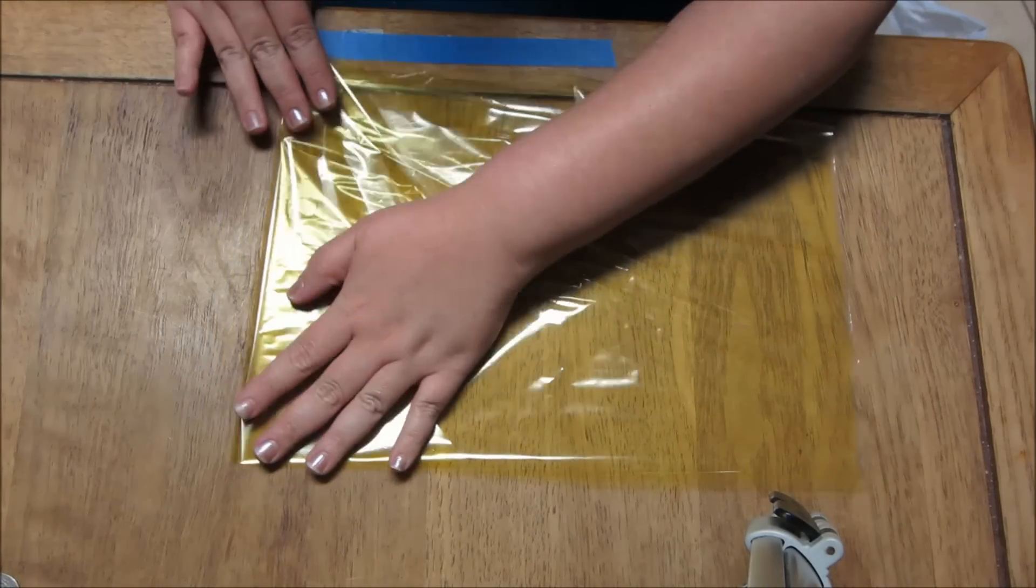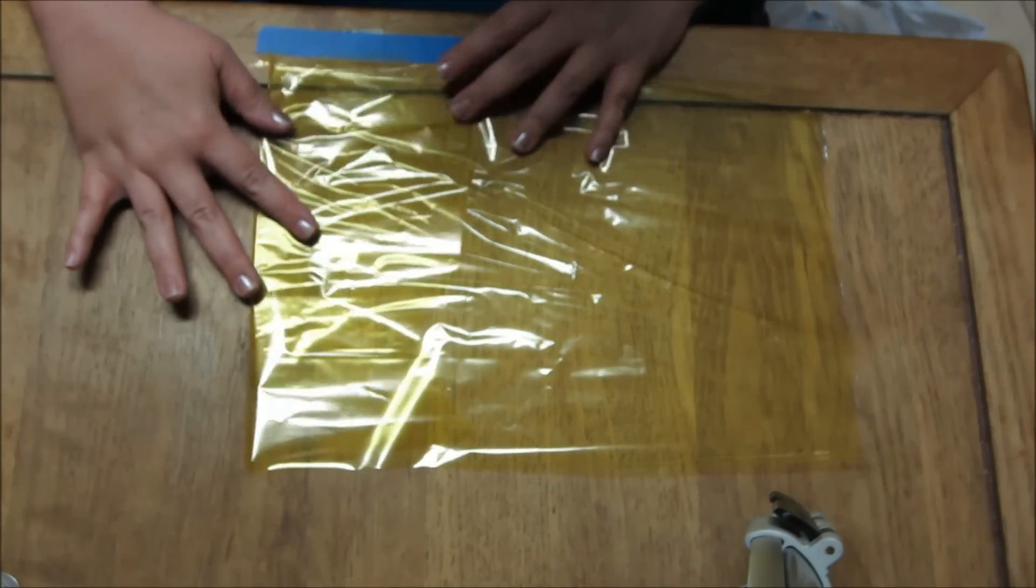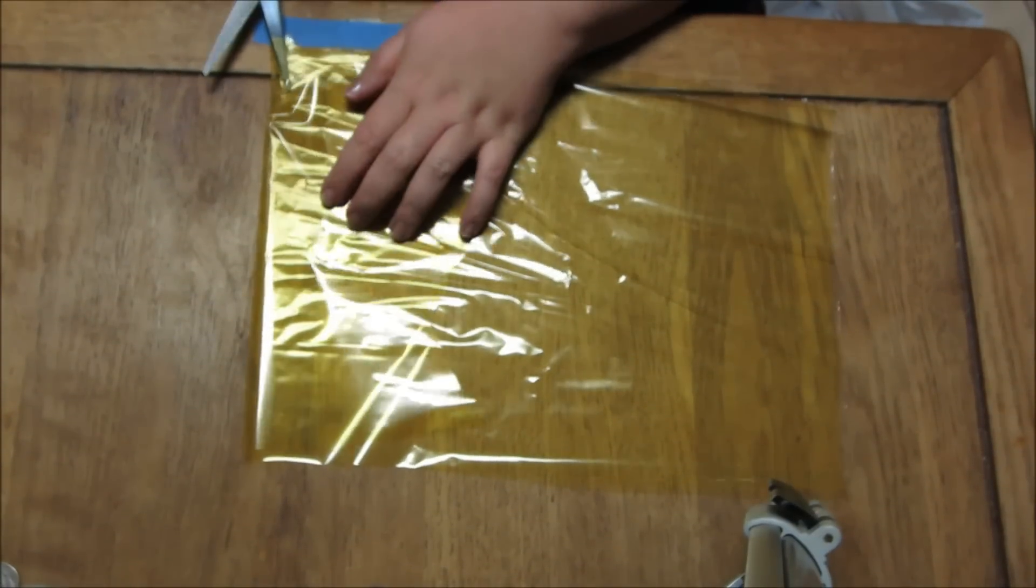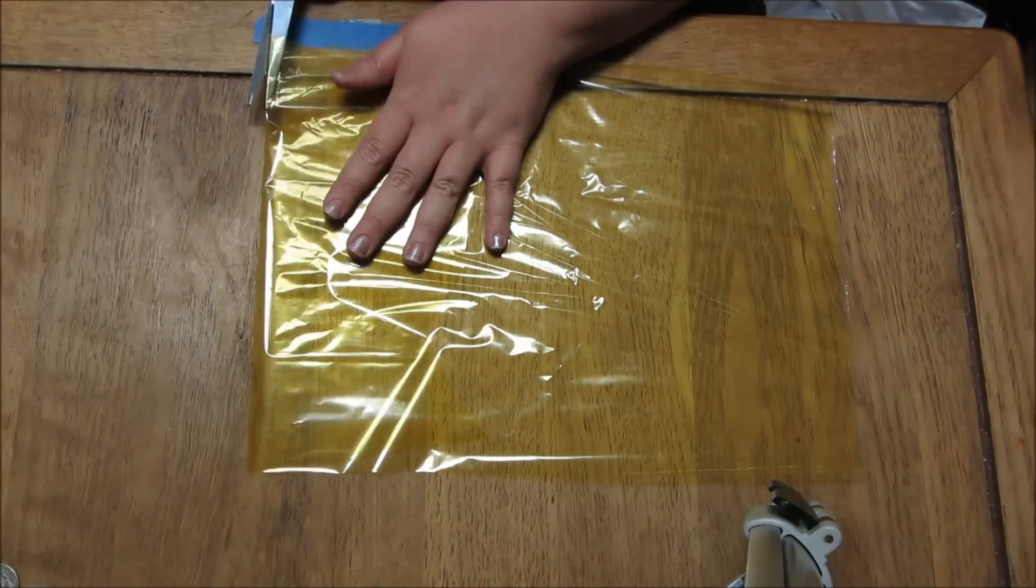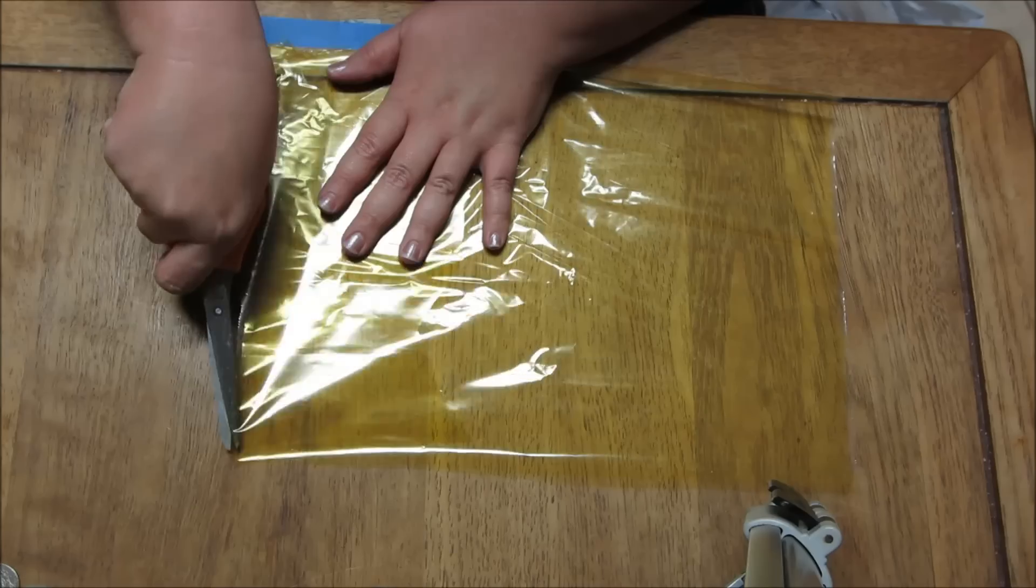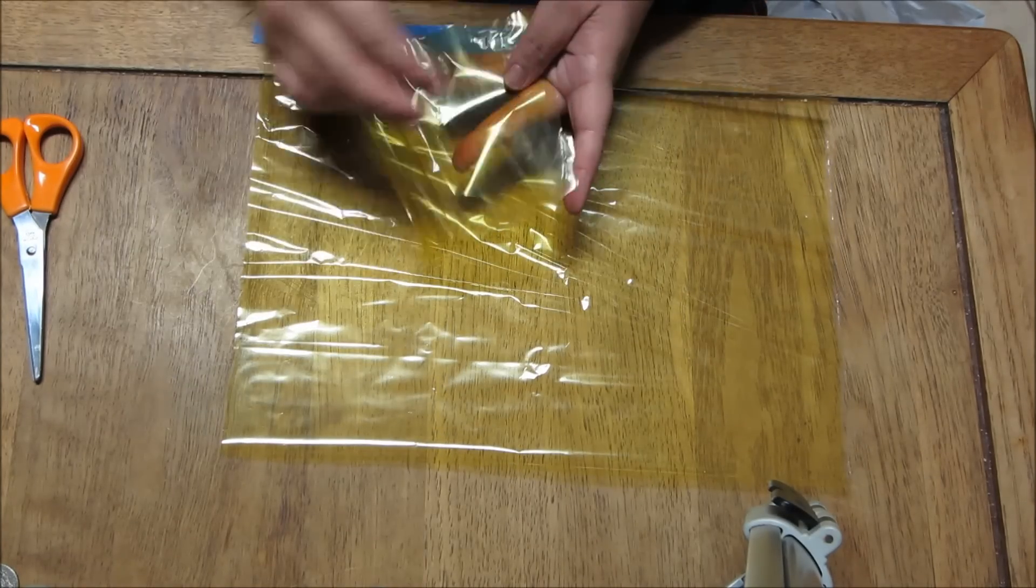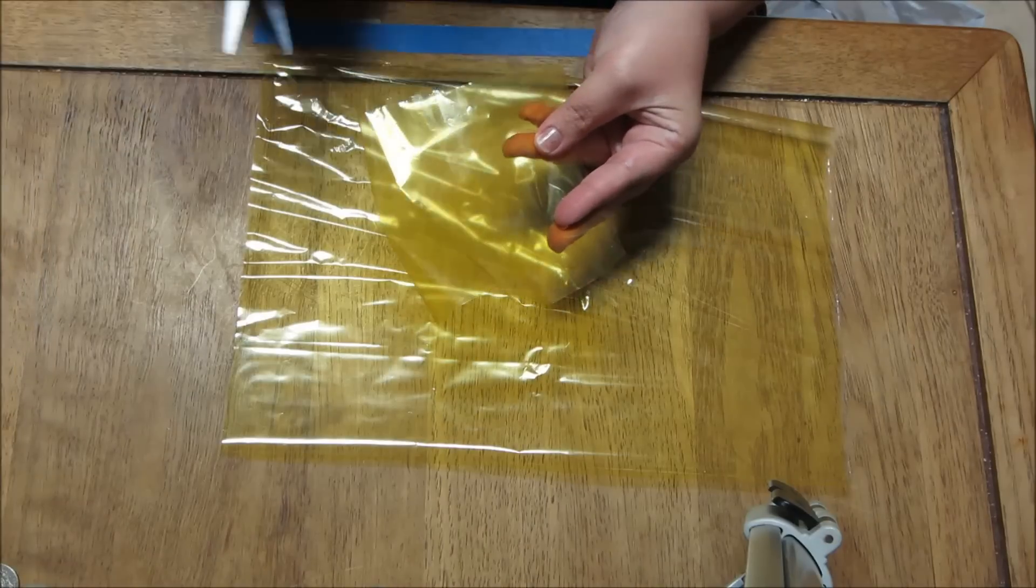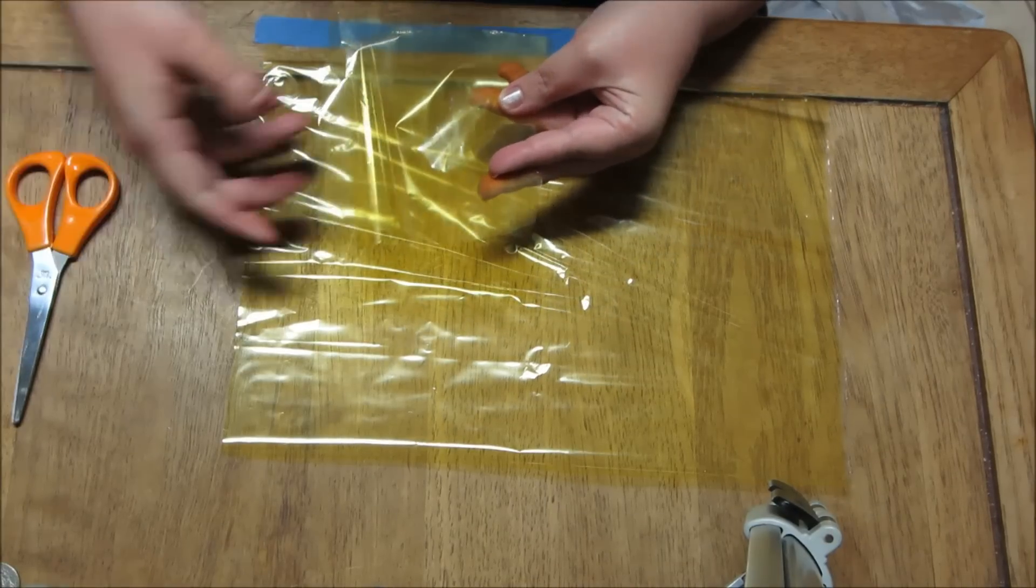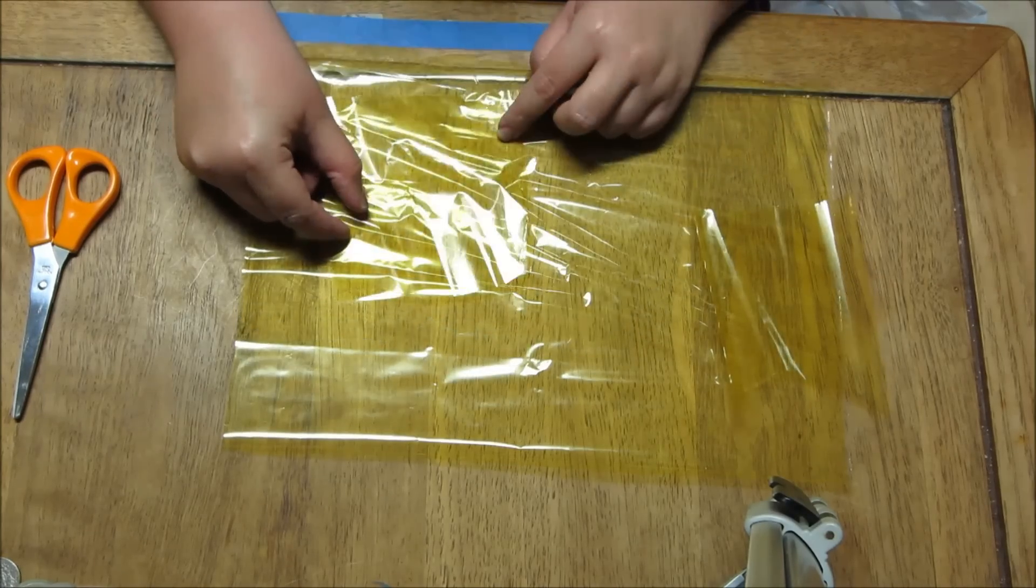I'm going to fold it to make straight lines. That's about a little bit over three inches just to give you some room. Then we're going to cut it straight across. Then we're going to fold it again and cut it again to make our square. It's a little bit bigger but that's okay.